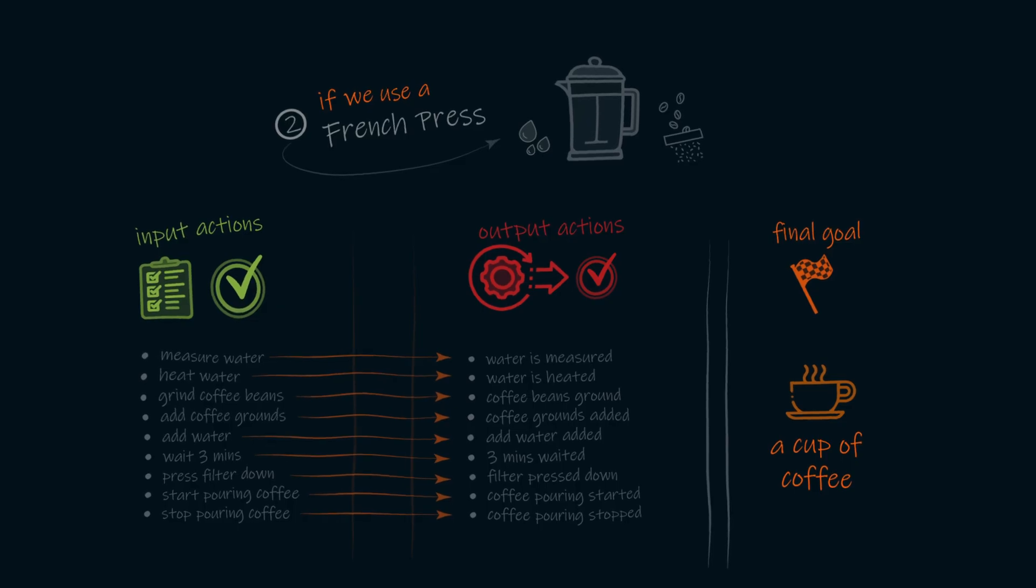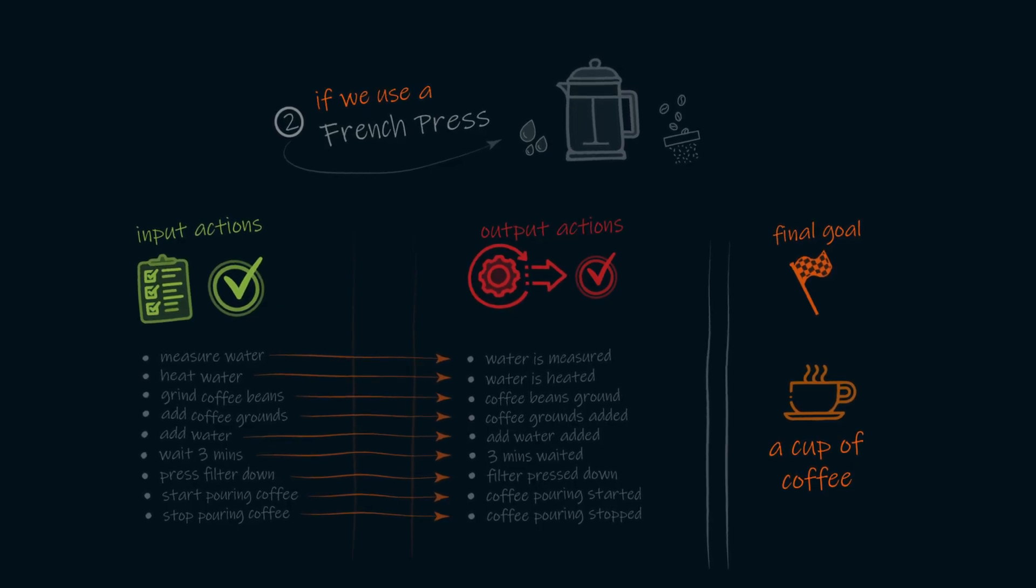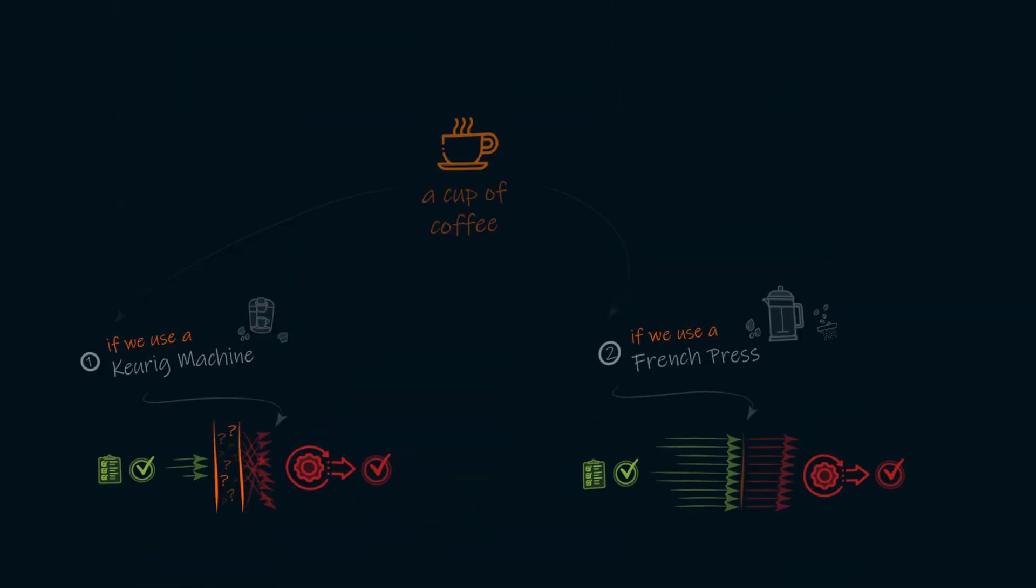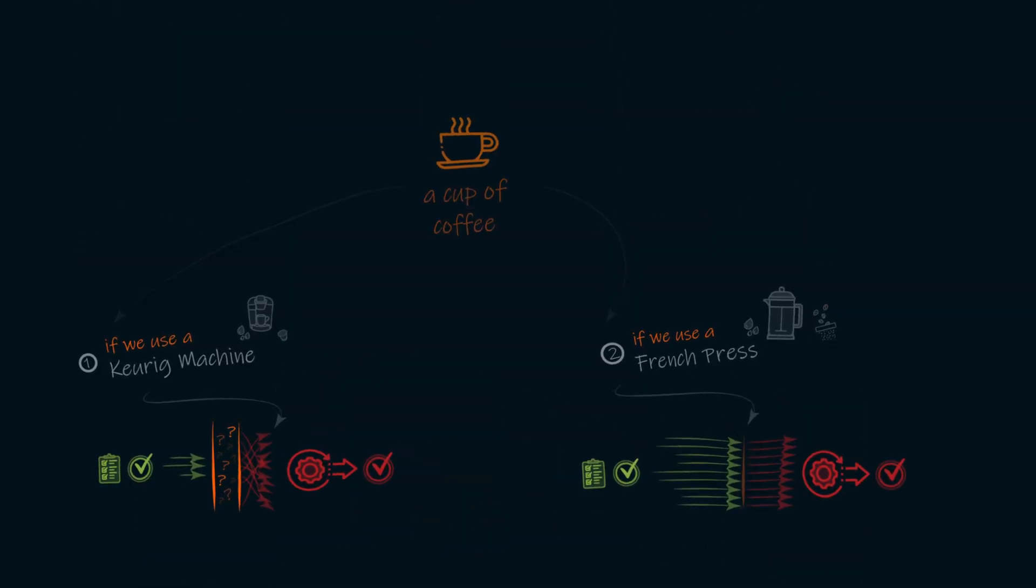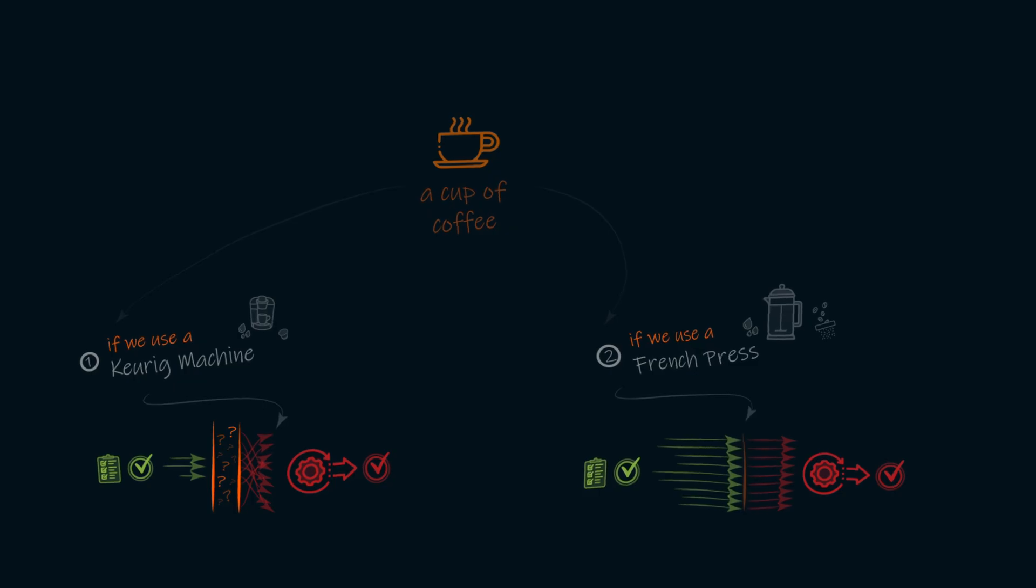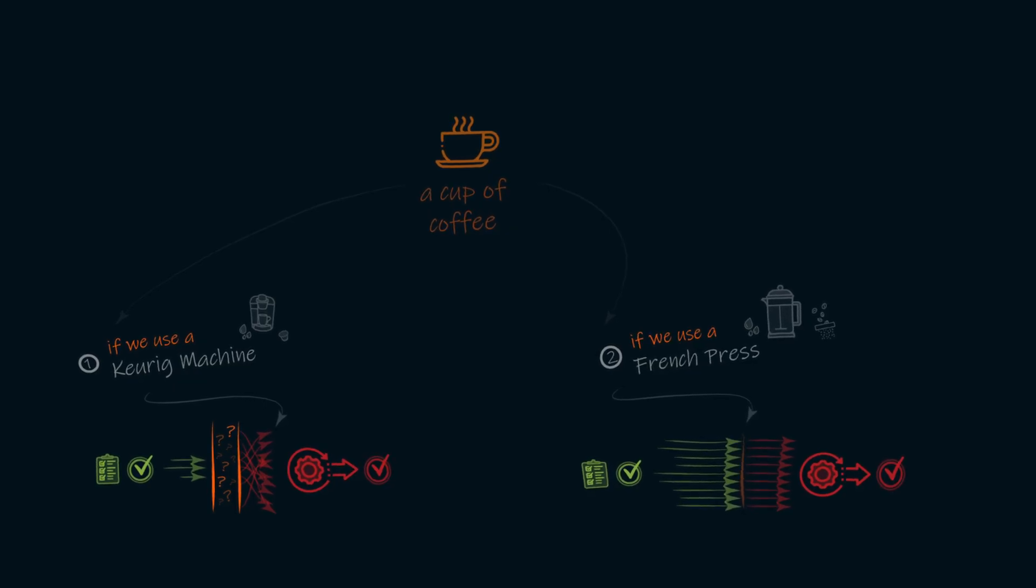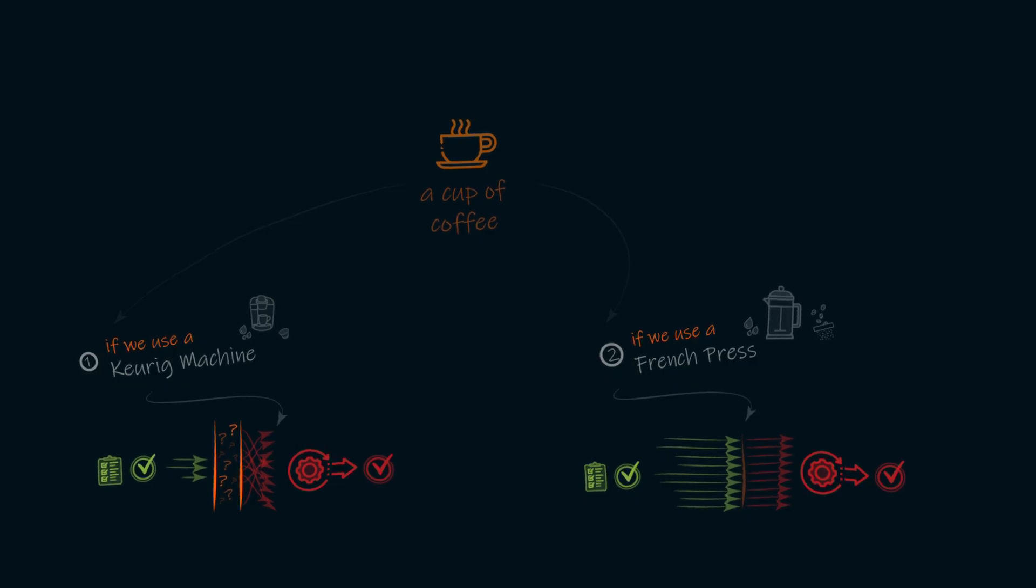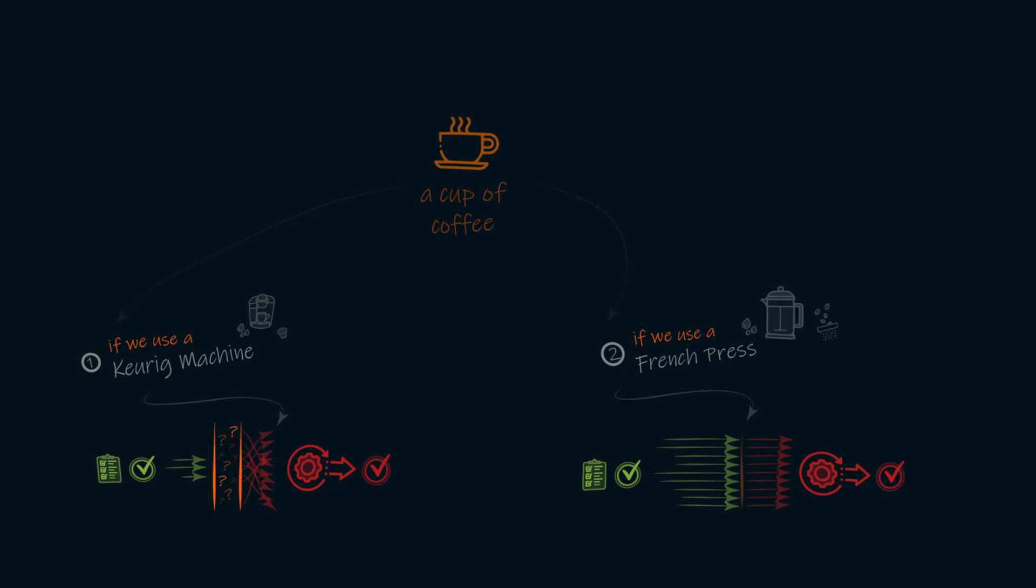We have full clarity and full control over the exact steps that take place. Now, if we zoom out and look at these two examples side by side, we can see the difference between them. And with our goal of making coffee, we can see how that can be accomplished. With the Keurig, we have fewer steps to complete, but many details are hidden from us. And with the French press, we have more steps to complete, but absolutely no details are hidden from us.